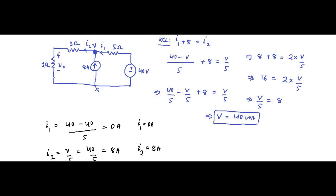I2 is flowing through the 2Ω resistor with polarity positive to negative, because resistors always absorb power and current flows from positive to negative. Therefore the voltage drop V0 = I2 × 2Ω = 8 × 2 = 16 volts. That part is complete.